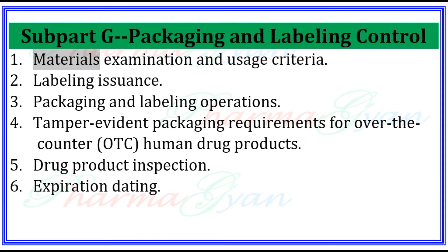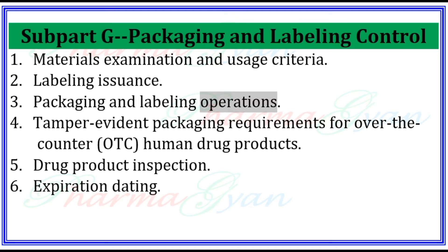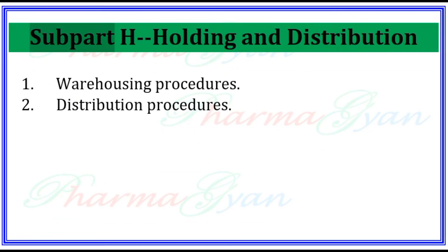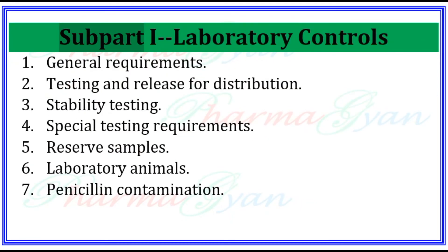Subpart G: Packaging and Labeling Control — Materials Examination and Usage Criteria, Labeling Issuance, Packaging and Labeling Operations, Tamper-Evident Packaging Requirements for Over-The-Counter (OTC) Human Drug Products, Drug Product Inspection, and Expiration Dating. Subpart H: Holding and Distribution — Warehousing Procedures and Distribution Procedures.